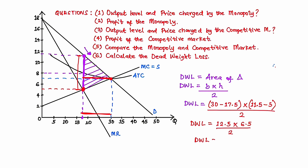So the deadweight loss equals $40.625. This is the loss incurred by the economy as a result of operating at the monopoly level rather than at the competitive market level. This completes the answer to these 6 questions. Thank you very much for watching. If you did benefit and enjoyed this video, please kindly leave it a like and subscribe to the channel.